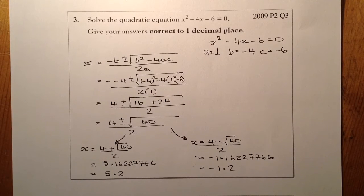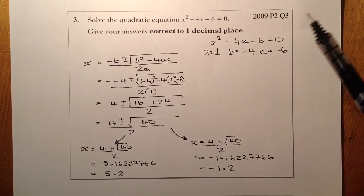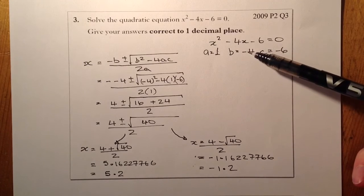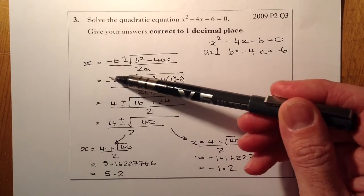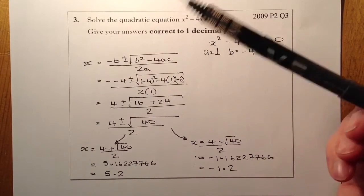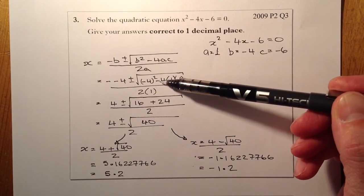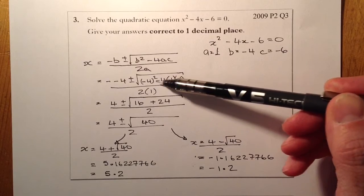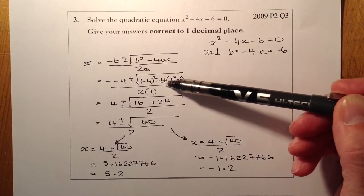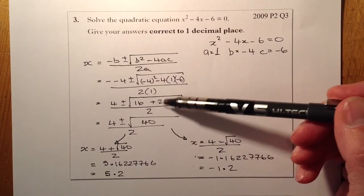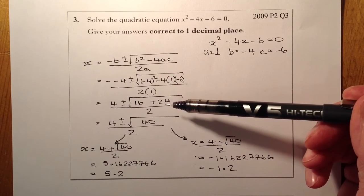There's a couple of places to watch out for in this type of question. One of the places would be when we've got a negative here for b, make sure you watch out for what happens here, you've got two negatives so it becomes a positive. Where the discriminant is, sometimes if you get your signs incorrect you might get that to work out to be a negative number, and we can't really take the square root of a negative number at this stage.